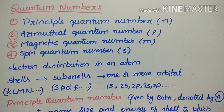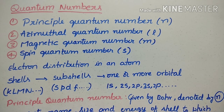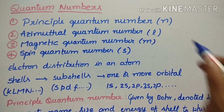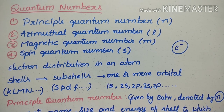Today's topic is quantum numbers from the atomic structure topic. To find the position or particular address of an electron in an atom, you need four quantum numbers — these are four identification numbers for the electron's location, similar to how you need a street number, road number, plot number, city, and district to find a person's address in the world.